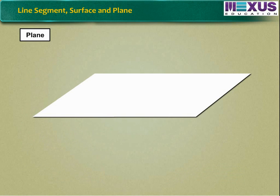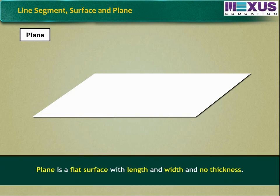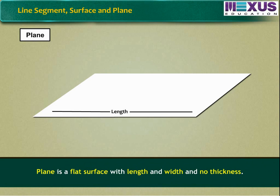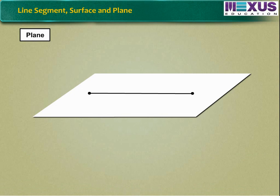Now, do you know what a plane in geometry is? It is a flat surface with length and width and no thickness. When a straight line is drawn through any two points on a plane, the line entirely lies in the plane.